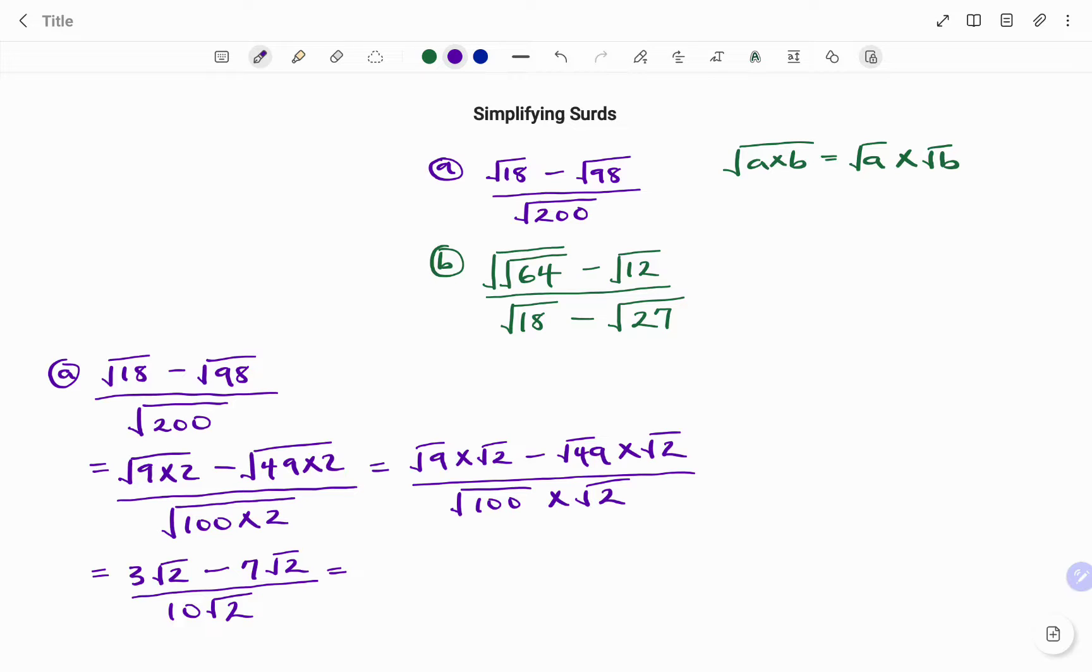That's equal to, this is similar to solving algebraic expressions at the top, because root 2 is common to both terms. It's similar to writing 3x minus 7x, that will be negative 4x. So my x in this case is my root 2, so what I have at the top will be negative 4 root 2 divided by 10 root 2. We can see that root 2 divided by root 2, that's 1, we are left with negative 4 over 10.